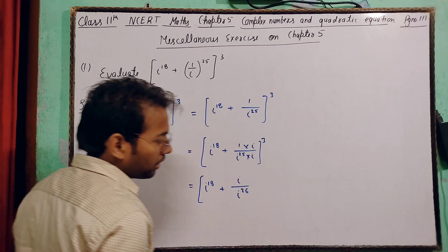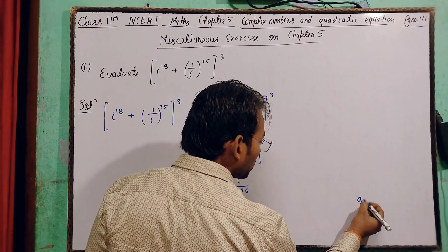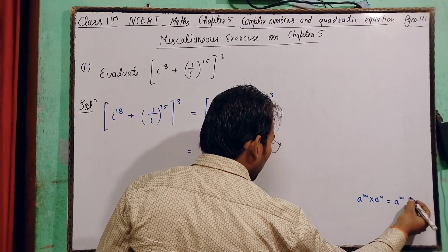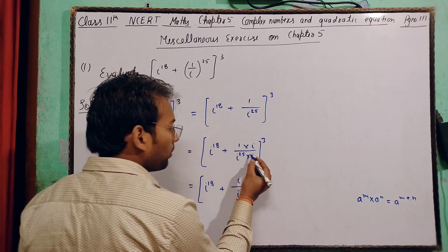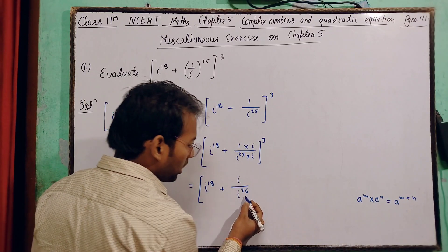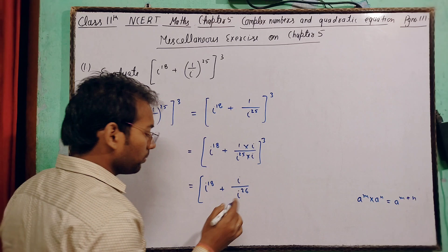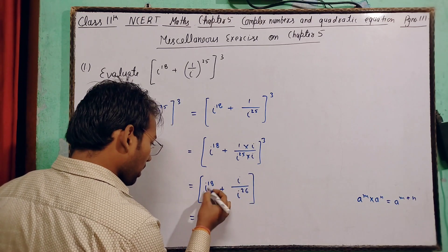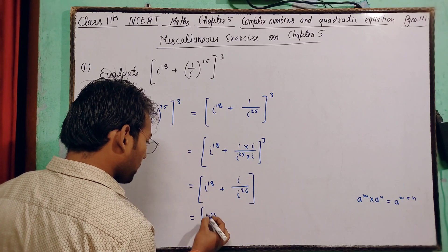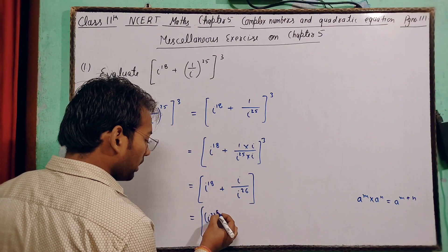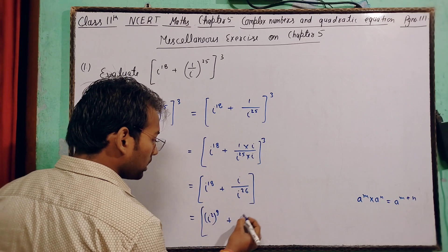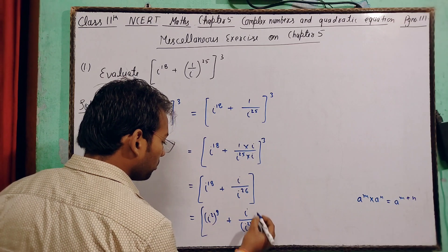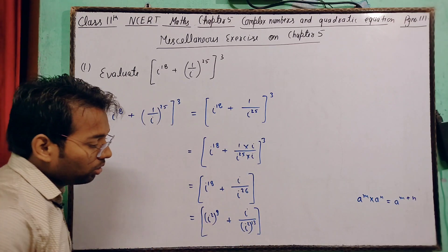i^25 में i से multiply करने पर i^26 हो जाएगा, क्योंकि a^m × a^n = a^(m+n) होता है — यहाँ power 25 और 1 थी, इसलिए 26 हो गई। अब i^18 को i² के रूप में लिखेंगे: (i²)^9 + i / (i²)^13।